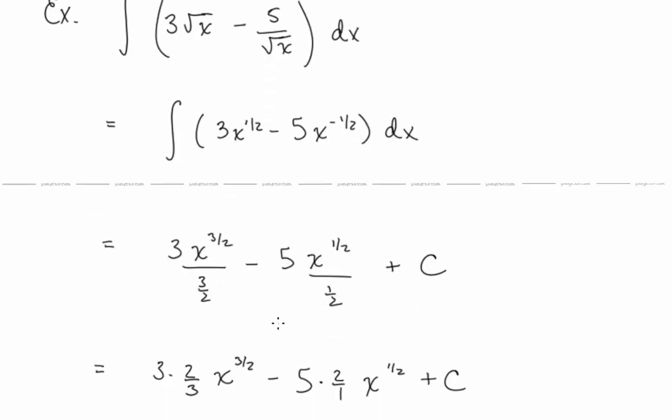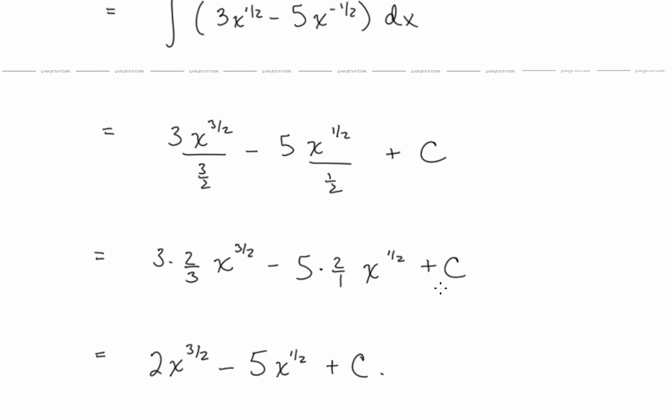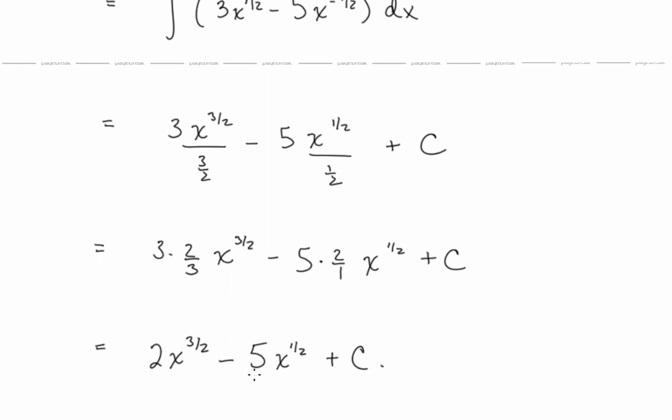Now we can take antiderivatives by adding a power and dividing by that number. And so we're here, and we add in our constant. And simplifying, we have 2x to the 3 halves minus 10x to the 1 half plus a constant.